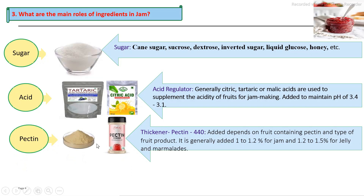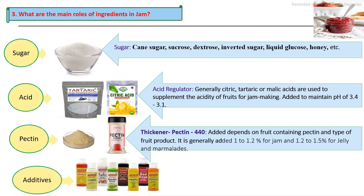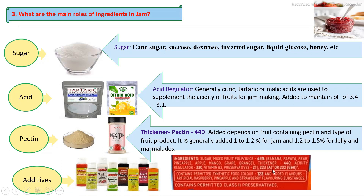Other additives including preservatives, colors and flavoring substances can be seen on these labels. In this mixed fruit jam, the proportion includes banana, papaya, pears, pineapples, apples, mango, grape and orange.